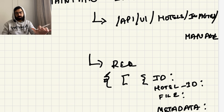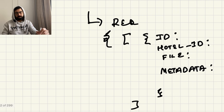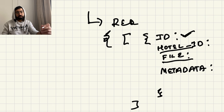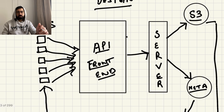The third API is maintain images — for updating or deleting images to manage them. The request includes the hotel ID, the image ID, the file if you want to update the image, and the metadata if you want to update the image metadata. Now let's talk about the overall design.